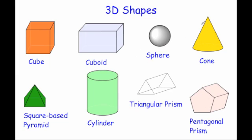Next, we've got a cone. A typical cone — well, an ice cream cone would be a typical shape which is a cone. It's got a circle on the bottom and it comes up to an apex at the top.